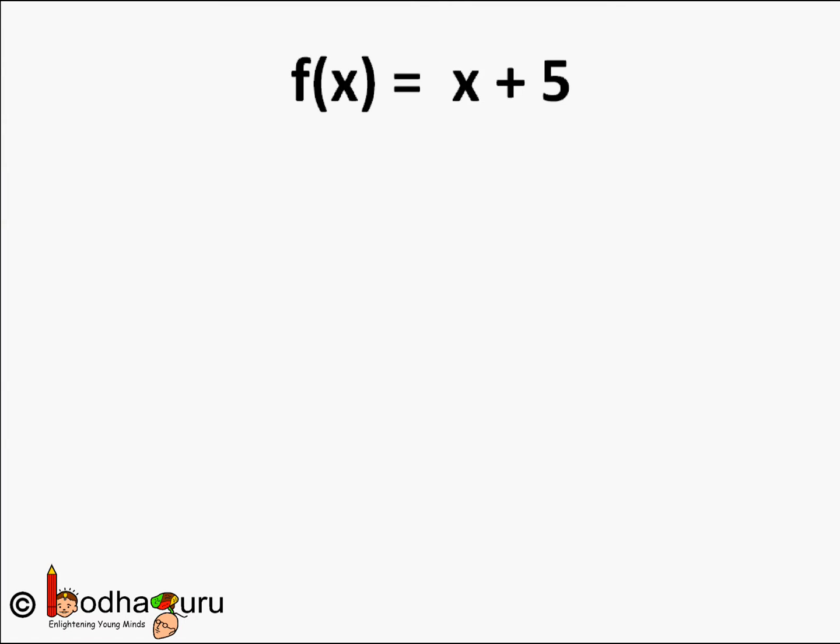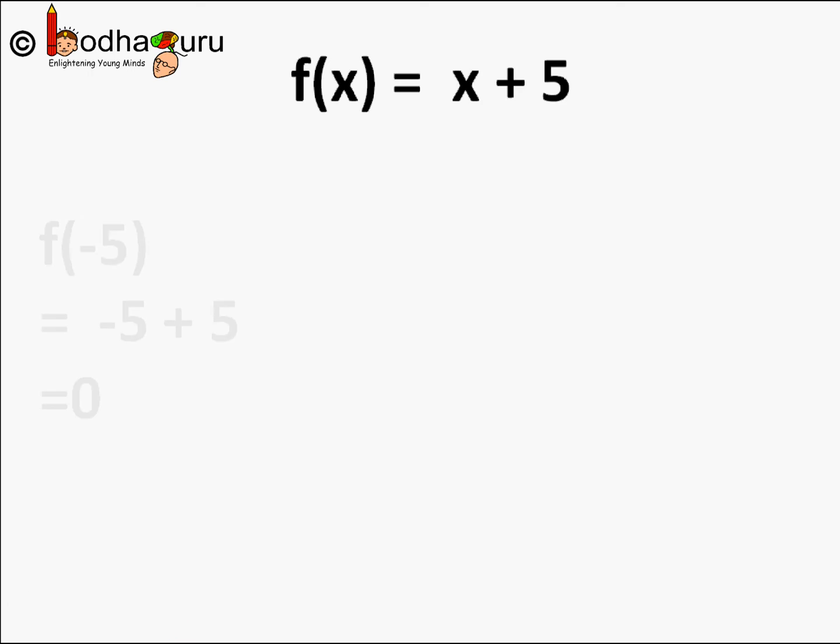A polynomial of degree 1 has only one zero. For example, f(x) = x + 5: here f(-5) = -5 + 5 = 0. So there is only one zero of this linear polynomial.